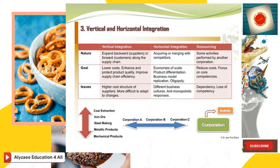There are three components which need to be discussed: nature, its goal, and the issues. In vertical integration, one can expand backward to suppliers or forward to customers along the supply chain. Horizontal integration involves acquiring or merging with competitors. Outsourcing refers to having some activities performed by another corporation.